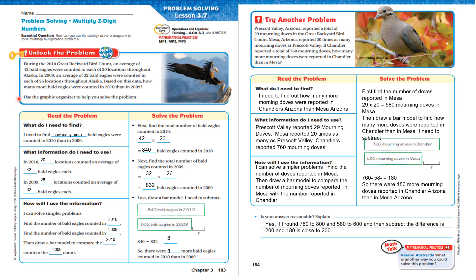Use the graphic organizer to help you solve the problem. What do I need to find out? I need to find how many more bald eagles were counted in 2010 than in 2009. What information do I need to use? In 2010, 20 locations counted an average of 42 bald eagles each. In 2009, 26 locations counted an average of 32 bald eagles each.